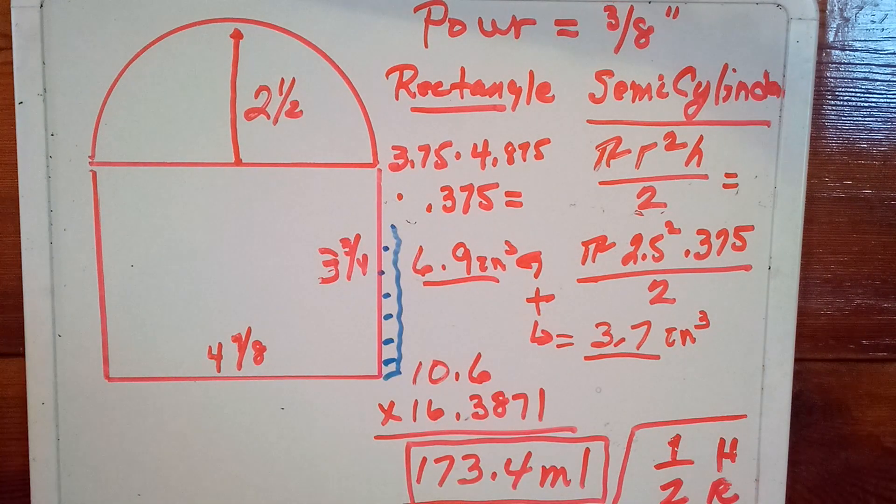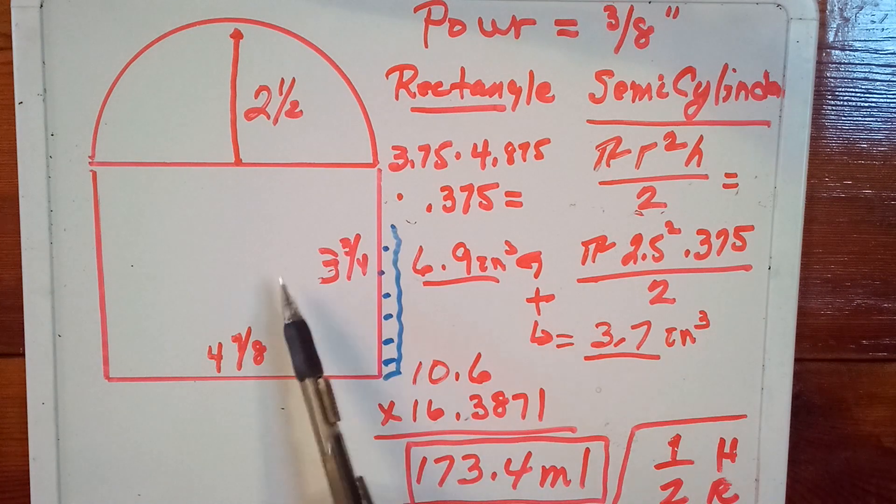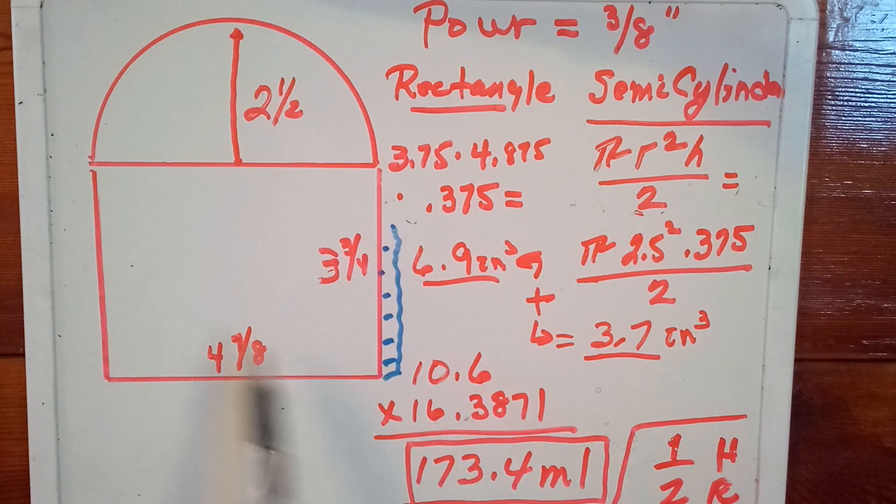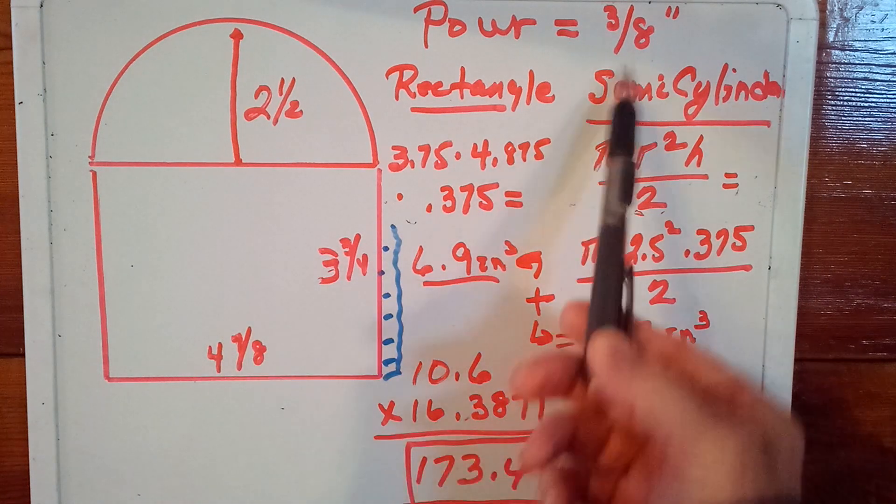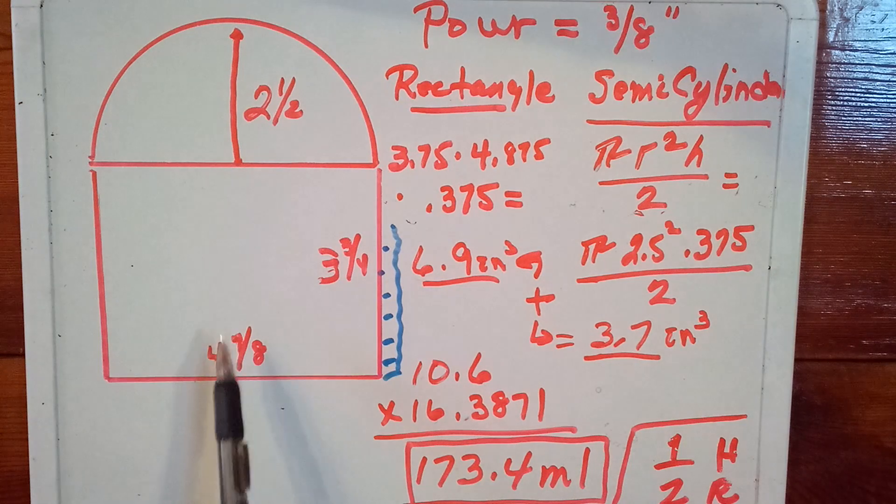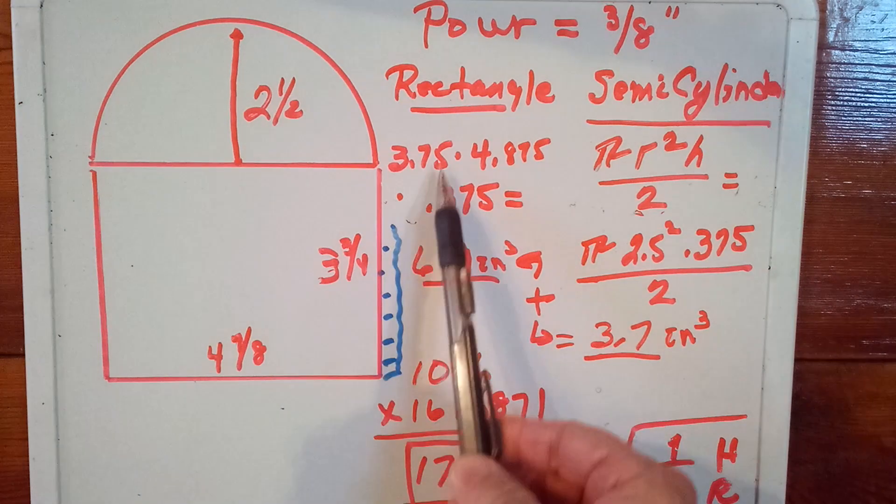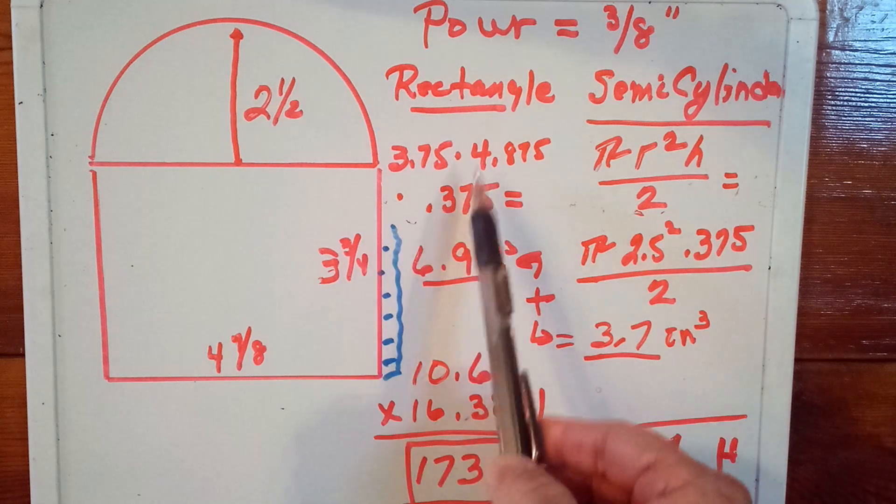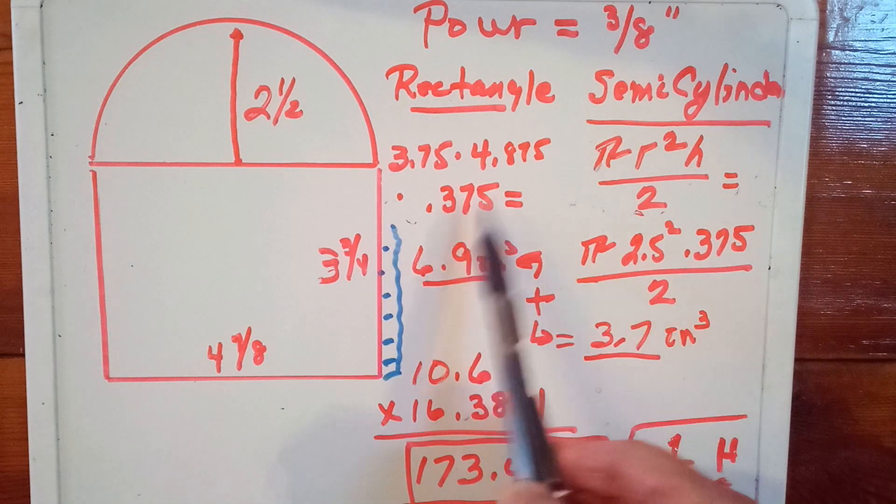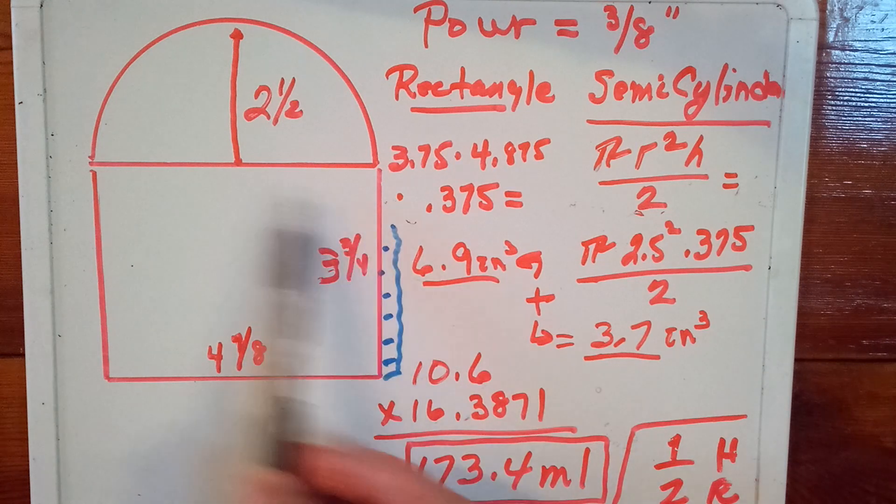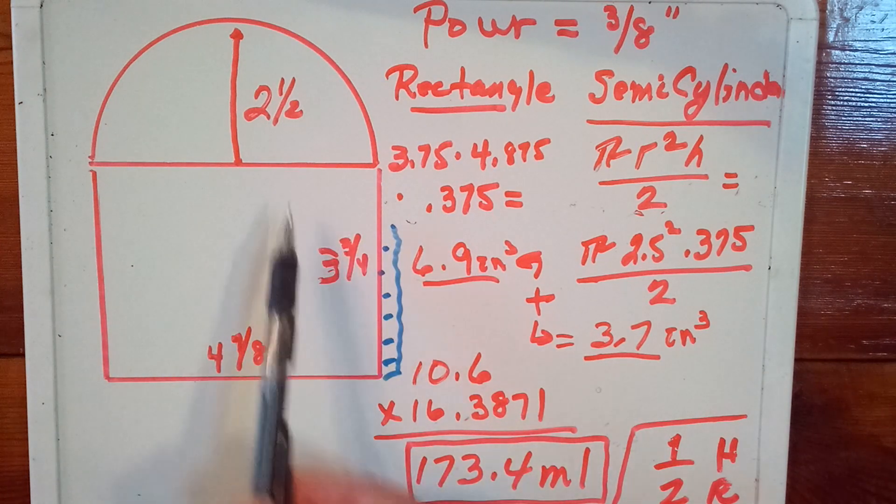So what we're doing is adding this volume to this volume to come up with total volume for a pour that is three-eighths of an inch deep. So if I'm on my rectangle, my calculation would be 3.75 times 4.875 times three-eighths. And that gives me 6.9 cubic inches of resin for this part of this figure.